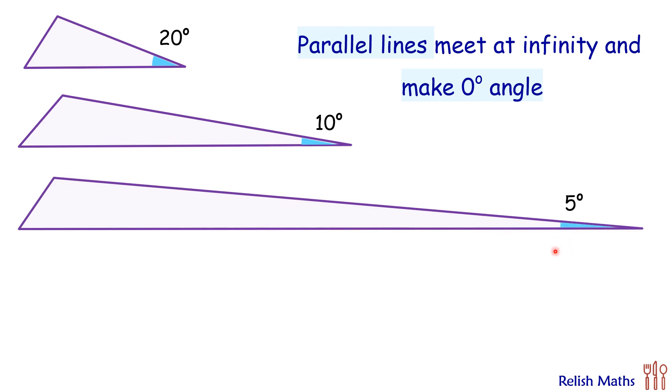So if we keep on stretching these lines further and further, there will be a point where these lines will not meet each other. And in turn, we'll say that these lines are making an angle between them of 0 degrees. And that's what we'll assume in our trick: that parallel lines meet at infinity and make an angle of 0 degrees.